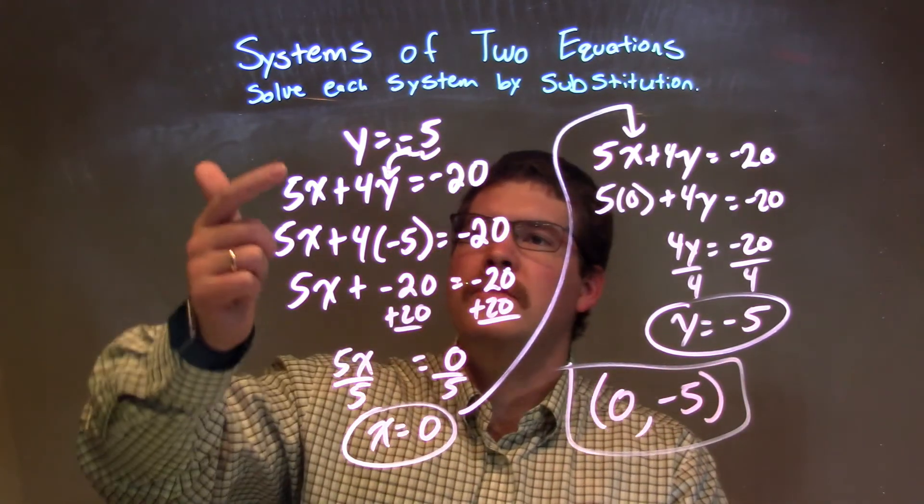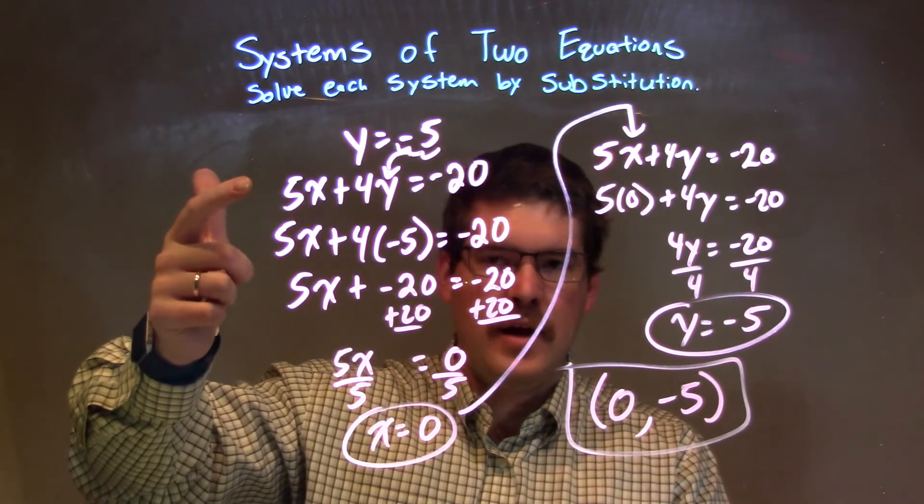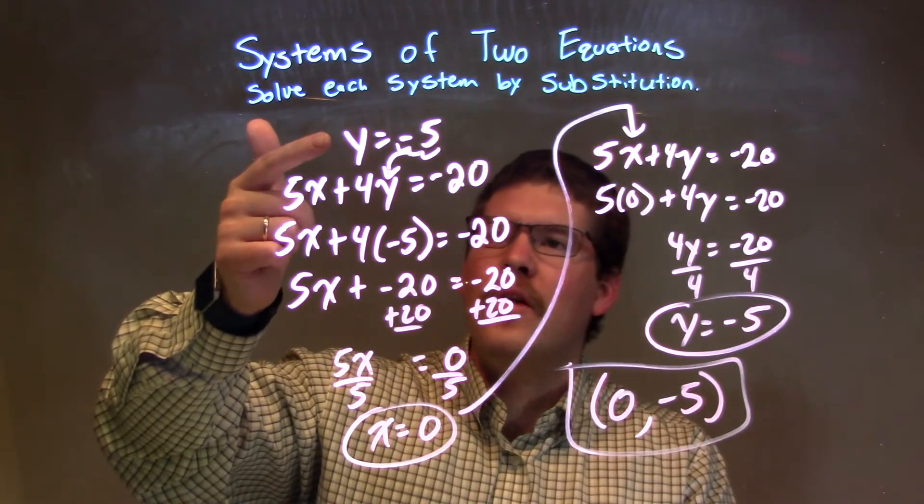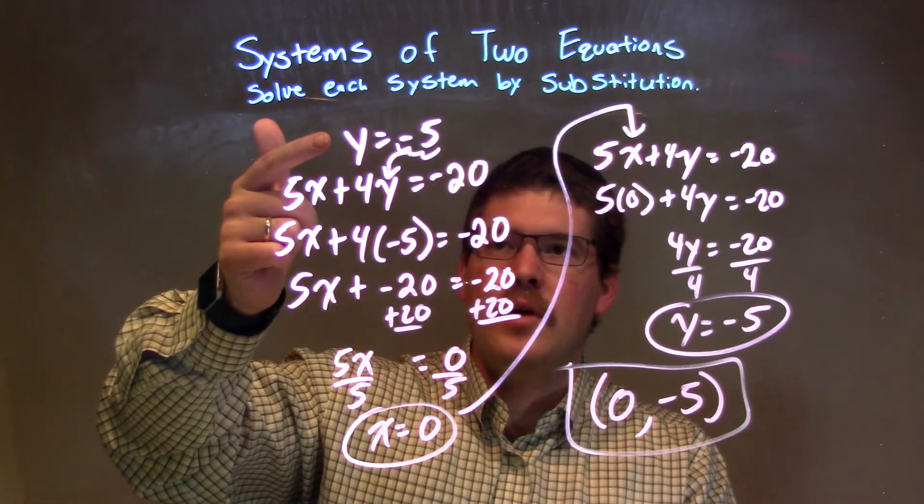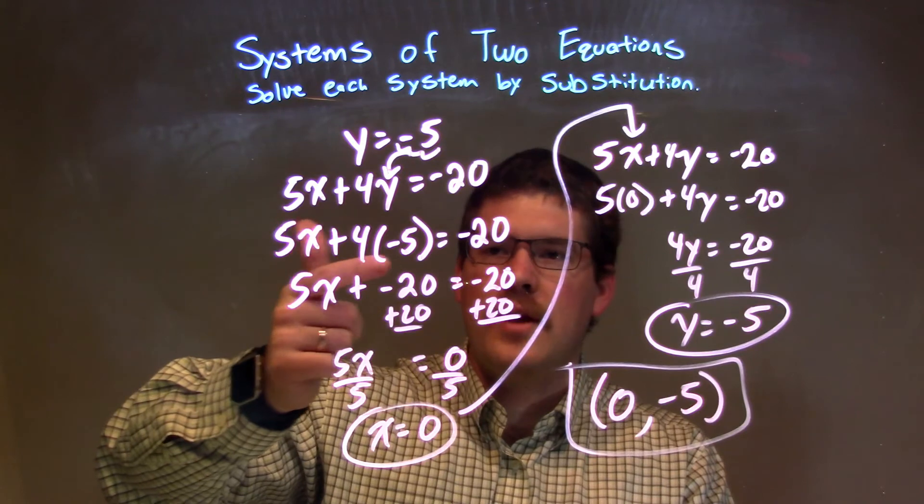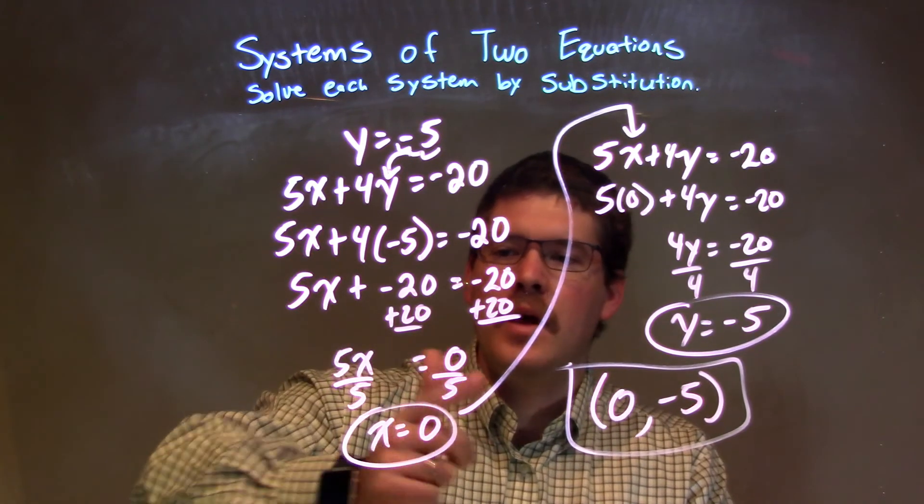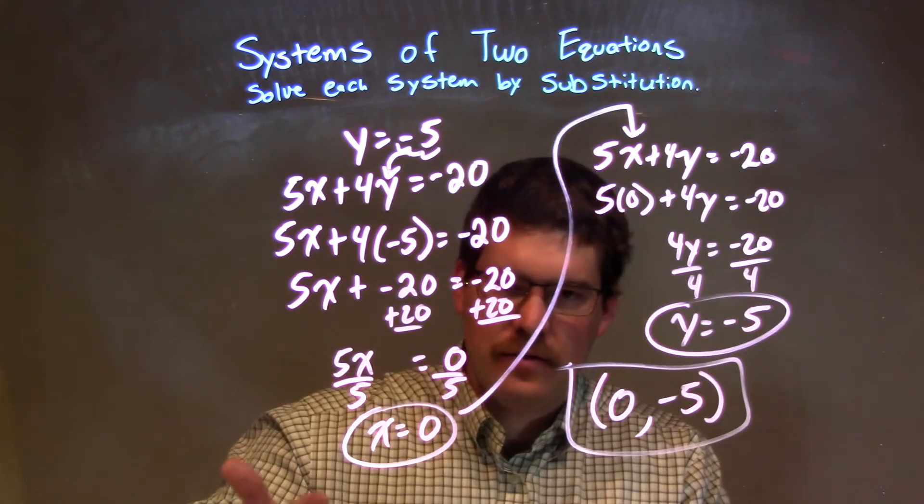So, let's recap. Our two equations that were given were y equals negative 5, and 5x plus 4y equals negative 20. One of them already had a variable isolated in the first one, so I plugged negative 5 into the y for the second one. Simplify. 4 times negative 5 equals negative 20. Add 20 to both sides, giving 0 on the right. Divide both sides by 5. x equals 0.